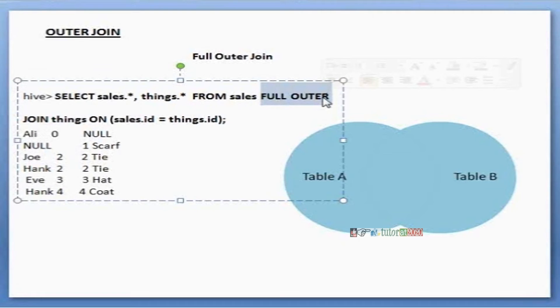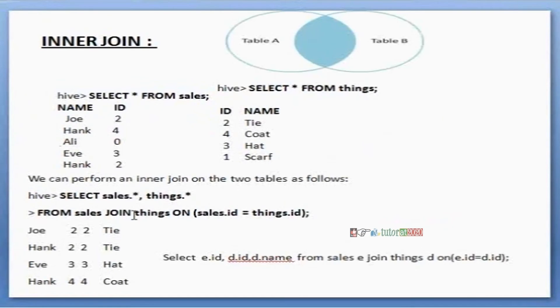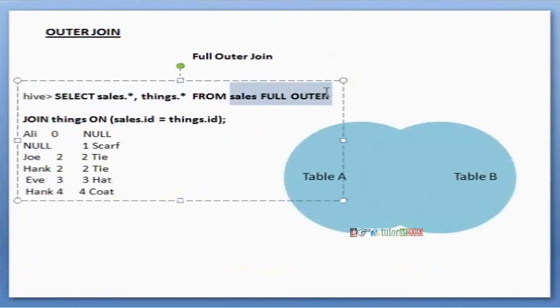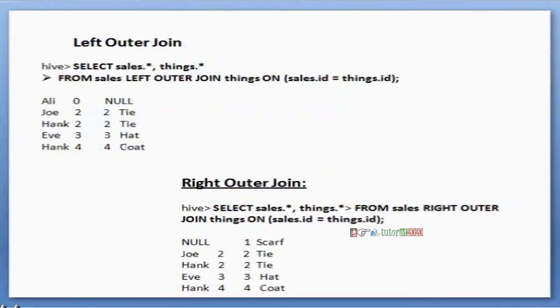The only difference between full outer and inner join is here we mention full outer. Just put full outer here, left outer just put here, right outer just put here. That's it.